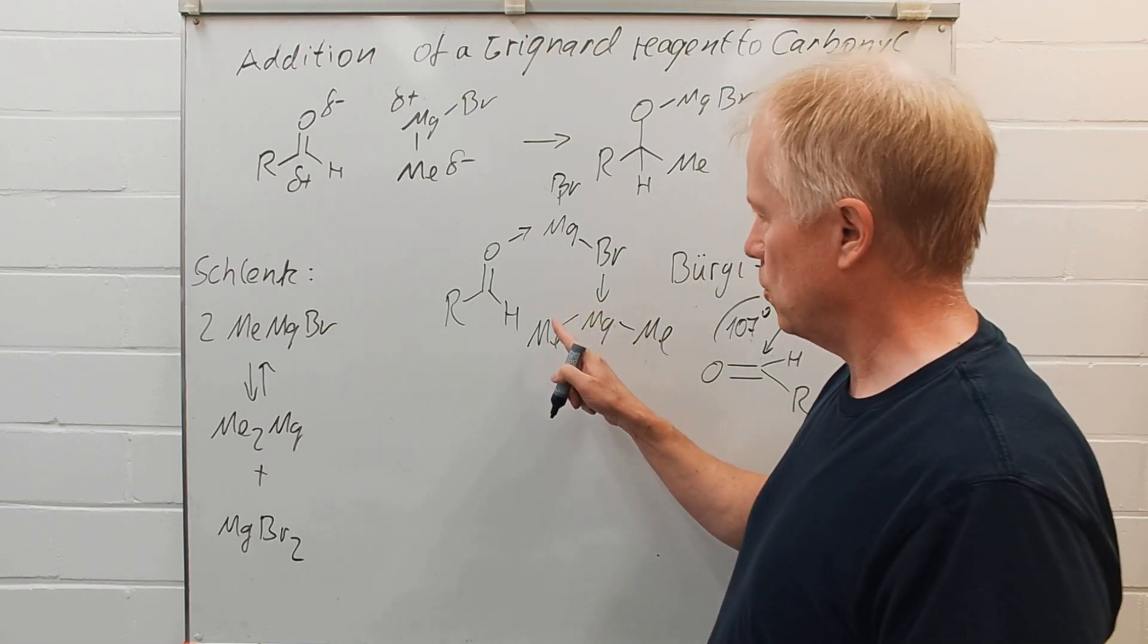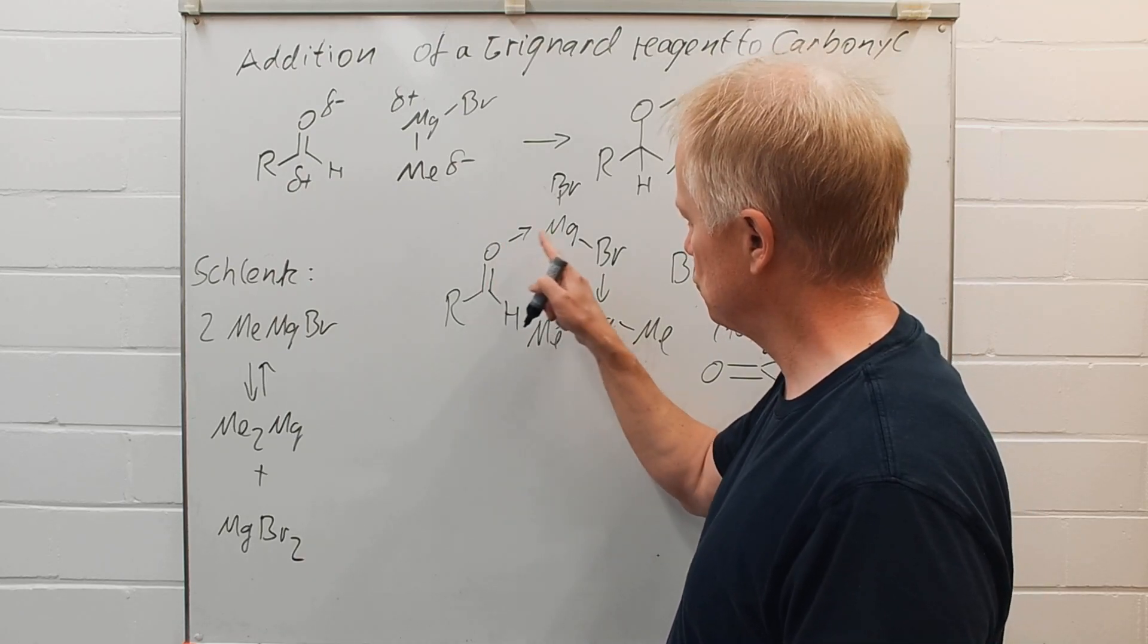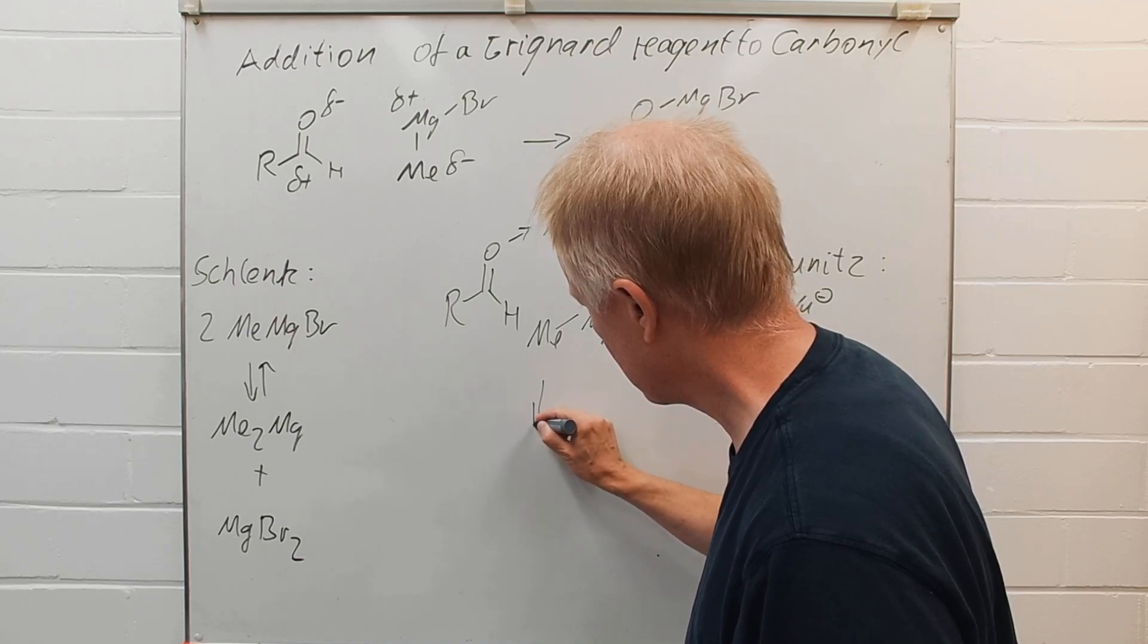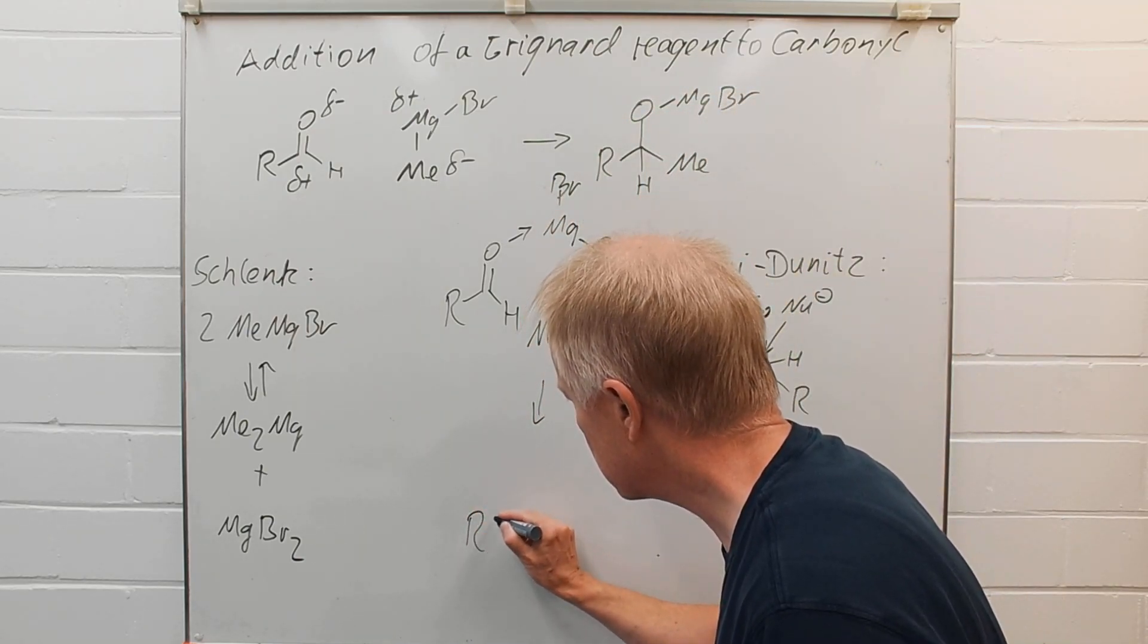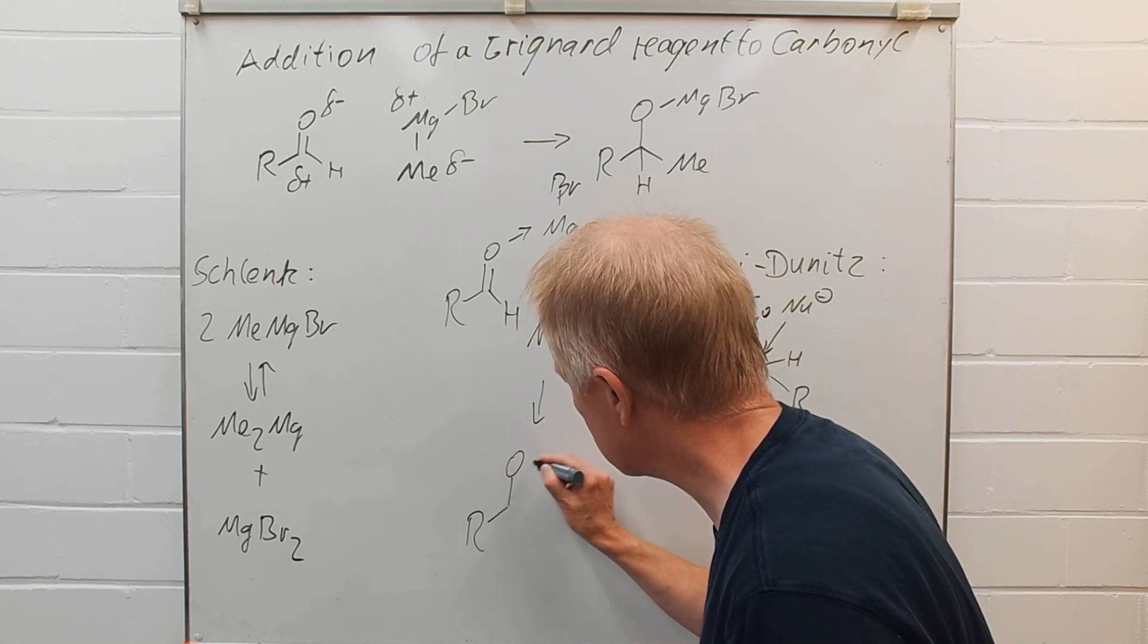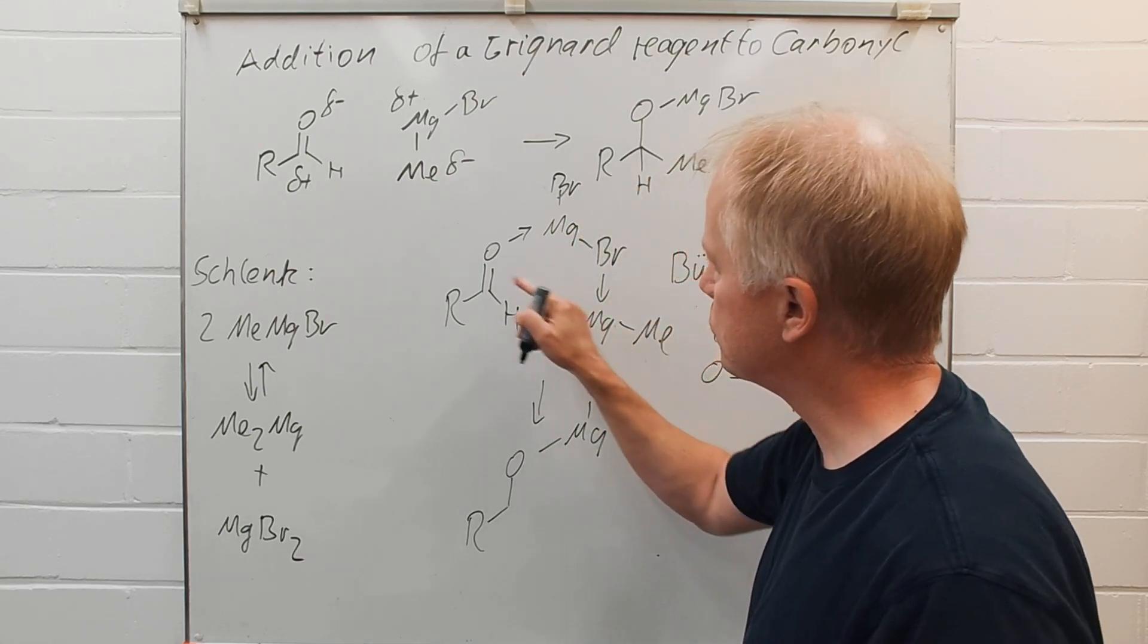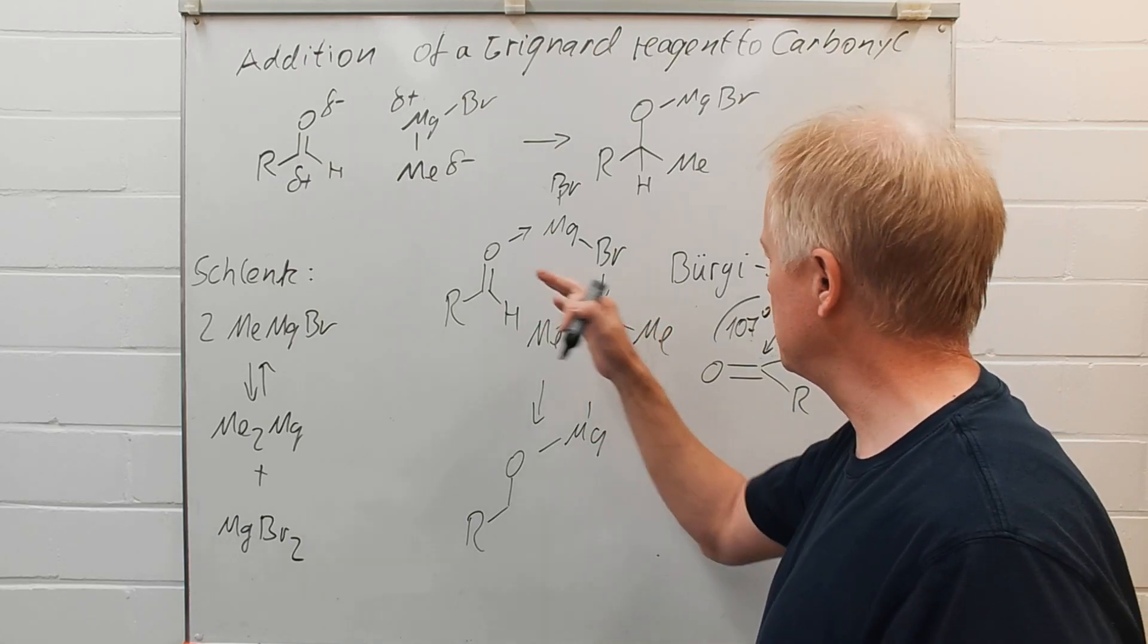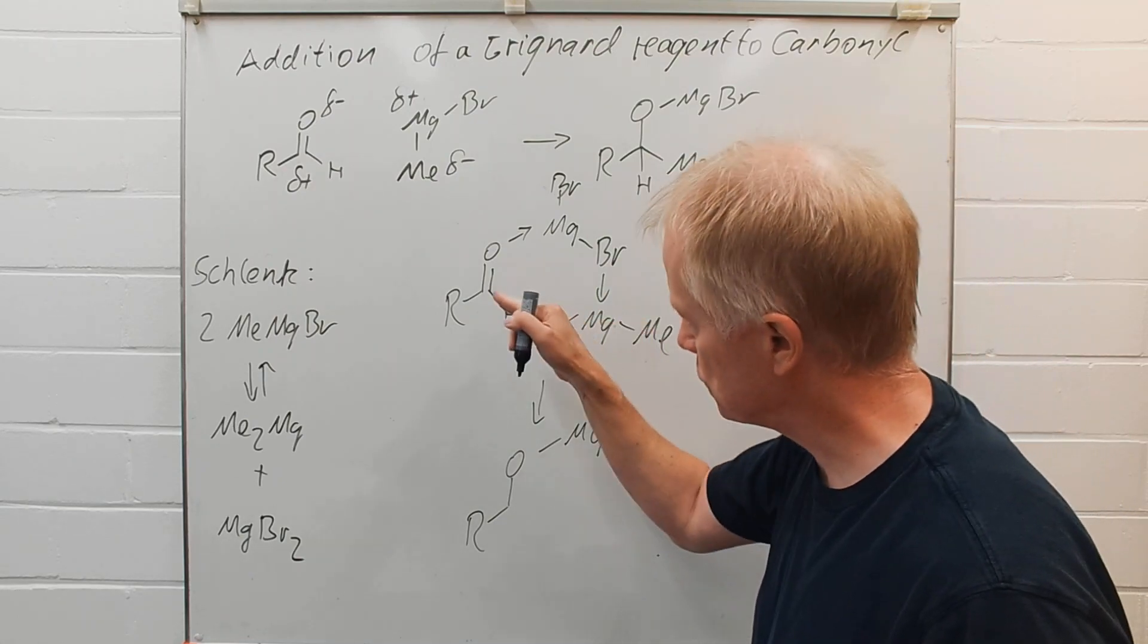And now through a six-member transition state—1, 2, 3, 4, 5, 6—we can achieve the addition reaction having no problem to fulfill the Burgi-Dunitz angle for the trajectory.